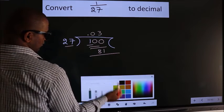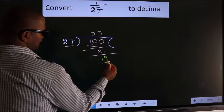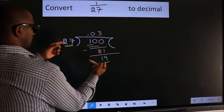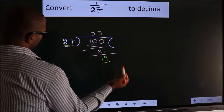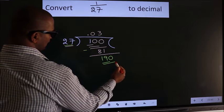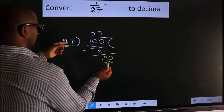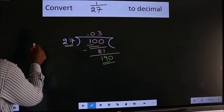Now we should subtract. We get 19. Here we have 19, here 27. 19 is smaller than 27. We already have the decimal, so directly take 0. So 190. A number close to 190 in the 27 table is, let us take 6.